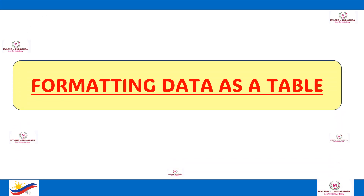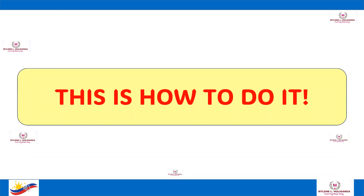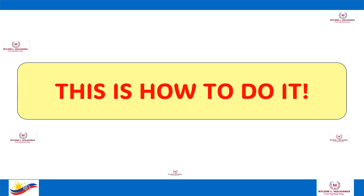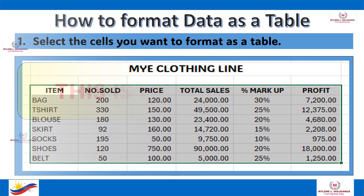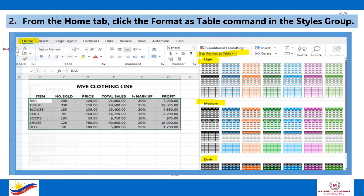Formatting data as a table — this is how to do it. First, select the cells you want to format as a table. Then, from the Home tab, click the Format as Table command in the Styles group.